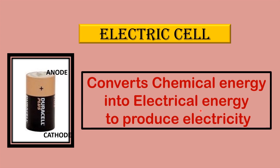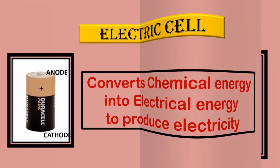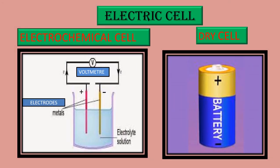By using chemical reaction, a battery produces potential difference across its terminals. There are two types of electric cells: electrochemical cell and dry cell.